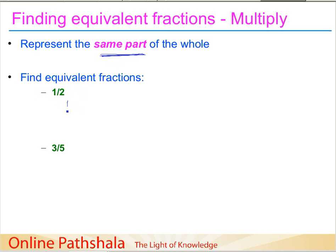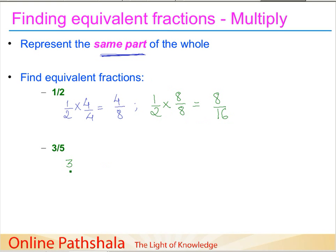For example, if we take one by two and multiply both numerator and denominator by four, we get four by eight. If we multiply by eight, we get eight by sixteen. In this way you can find a huge number of equivalent fractions by simply multiplying the numerator and denominator by the same number.